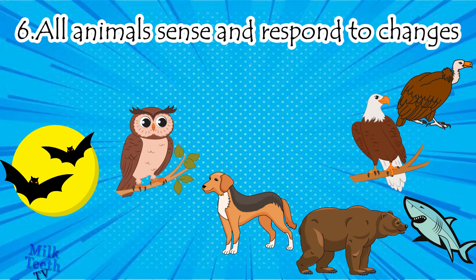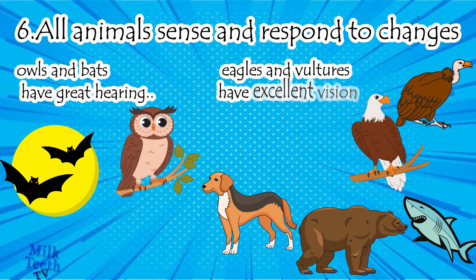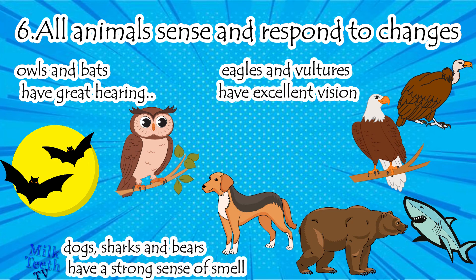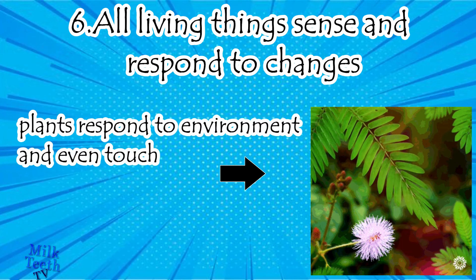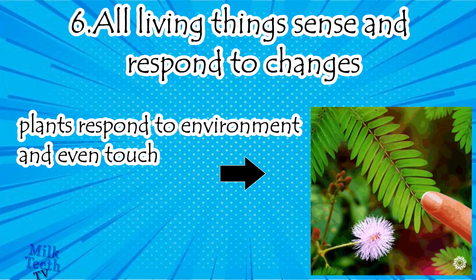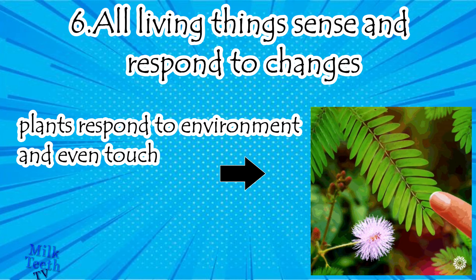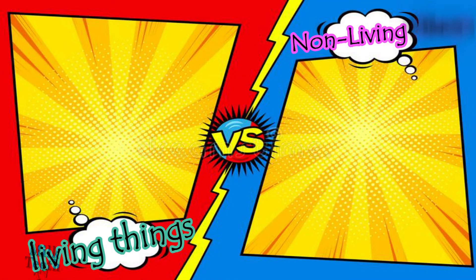All animals also sense and respond to the environment. Owls and bats have great hearing, while eagles and vultures have excellent vision. Dogs, sharks, and bears have a strong sense of smell. Even plants respond to the environment — for example, the touch-me-not plant folds up when we touch it.